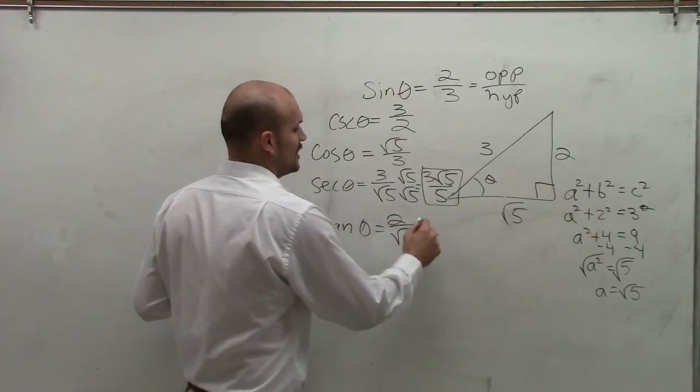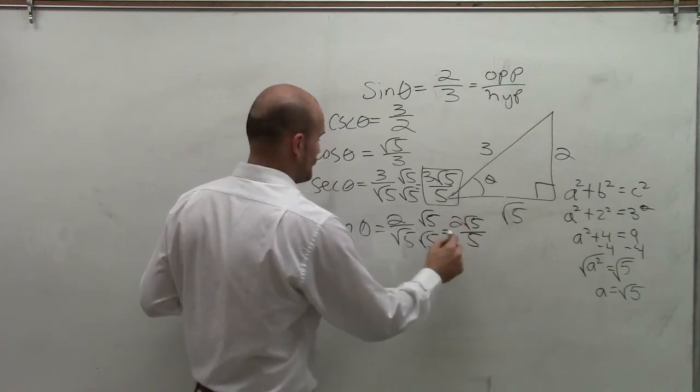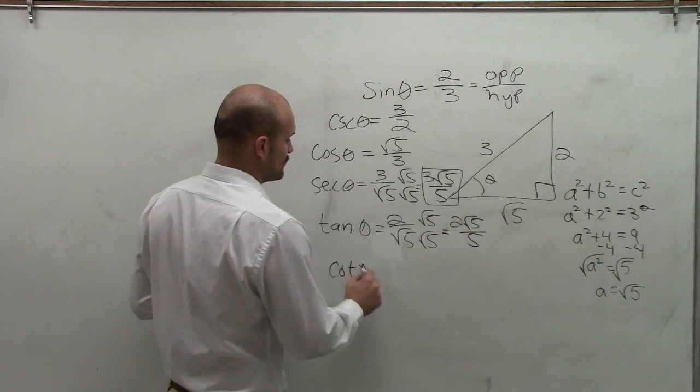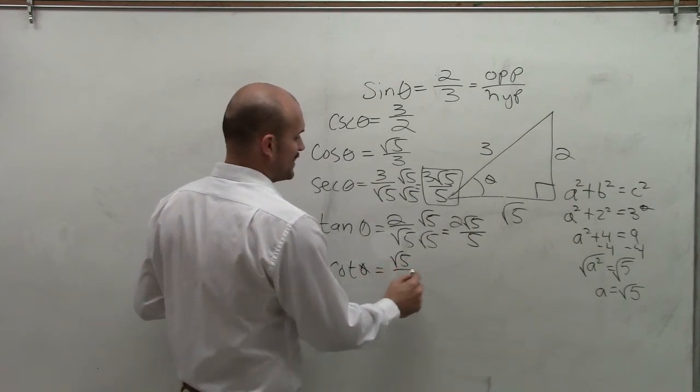Again, you have to rationalize the denominator. So therefore, you get 2 radical 5 over 5. And then cotangent, which is the reciprocal identity of that, is going to simply be the square root of 5 divided by 2.